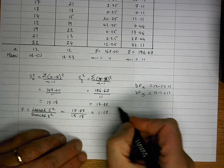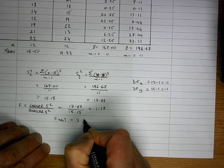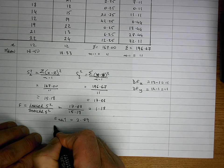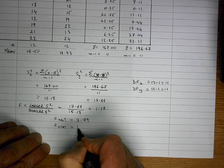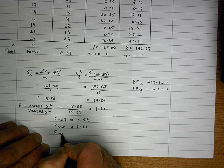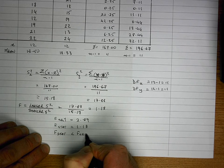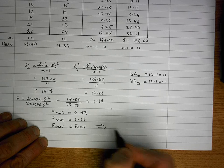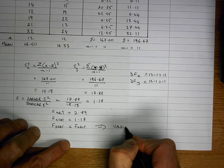So my F crit is equal to 2.89. My F statistic is equal to 1.18. Therefore my F stat is less than my F crit. And what this means, what this tells us to and implies, is that the variance is equal.